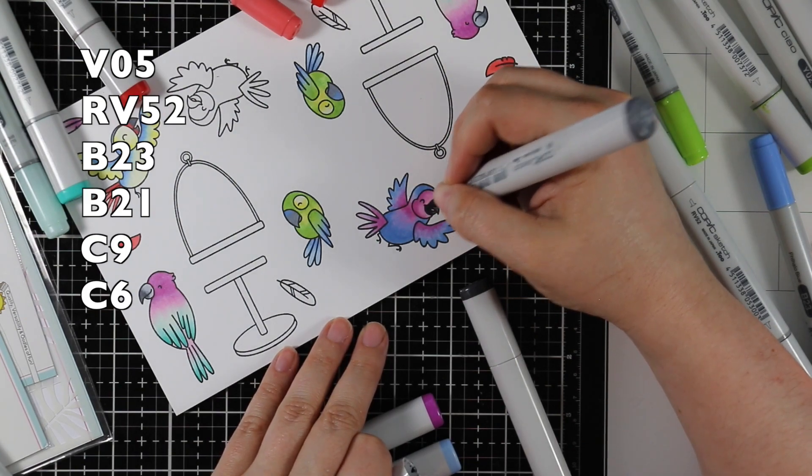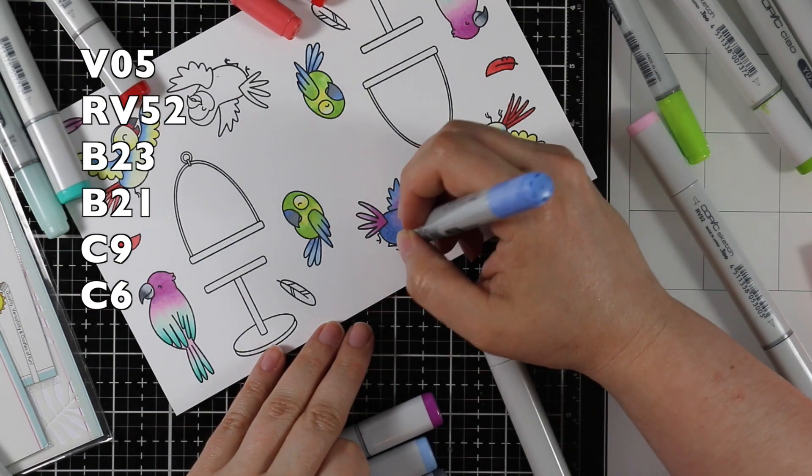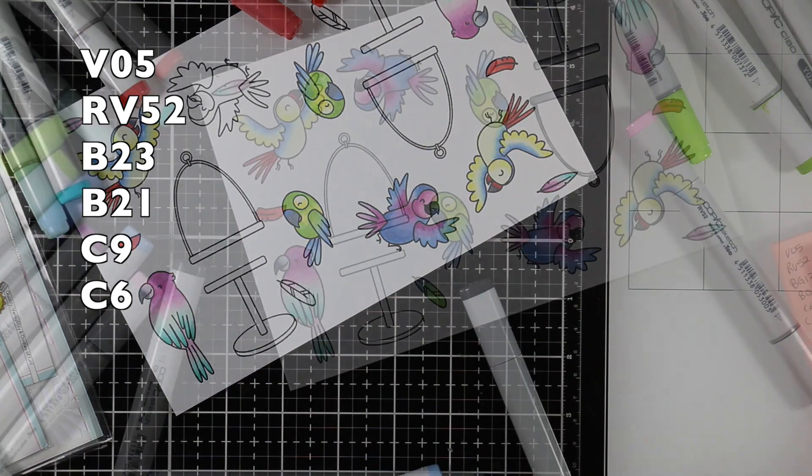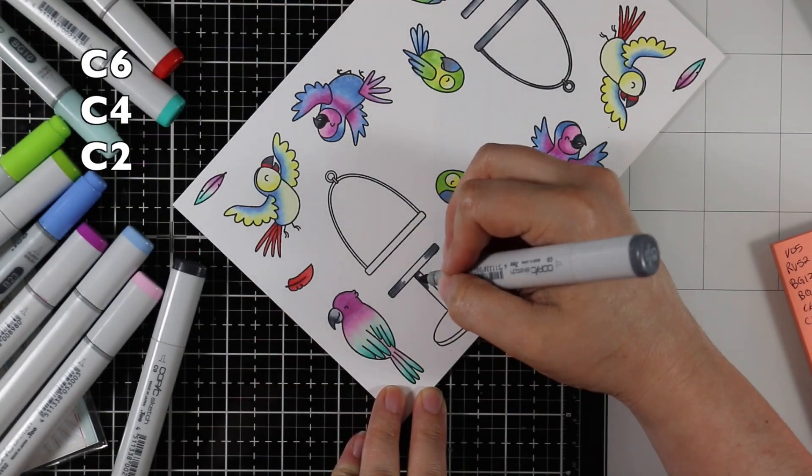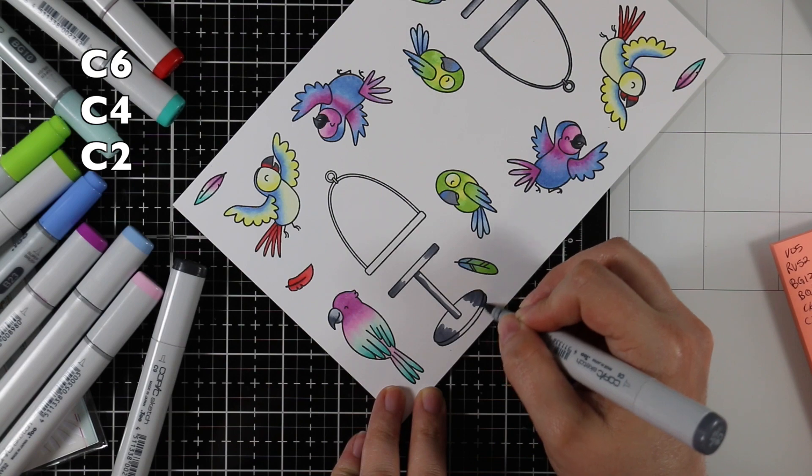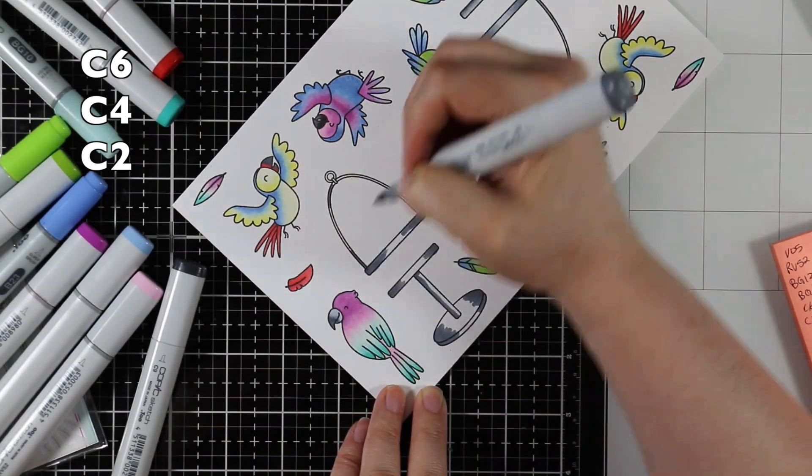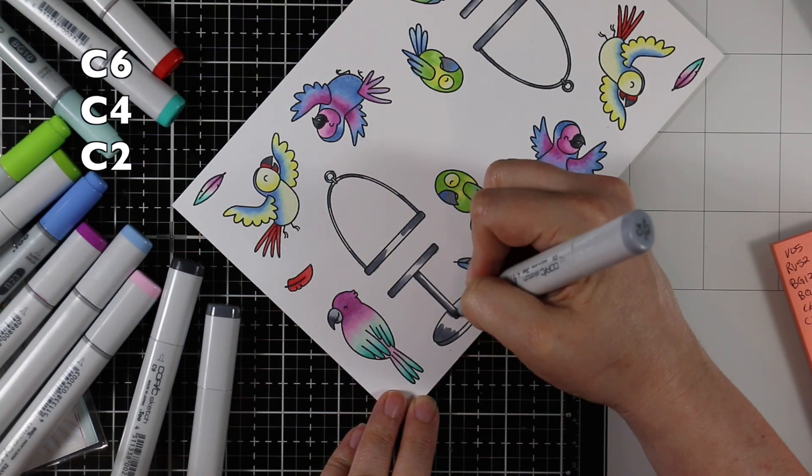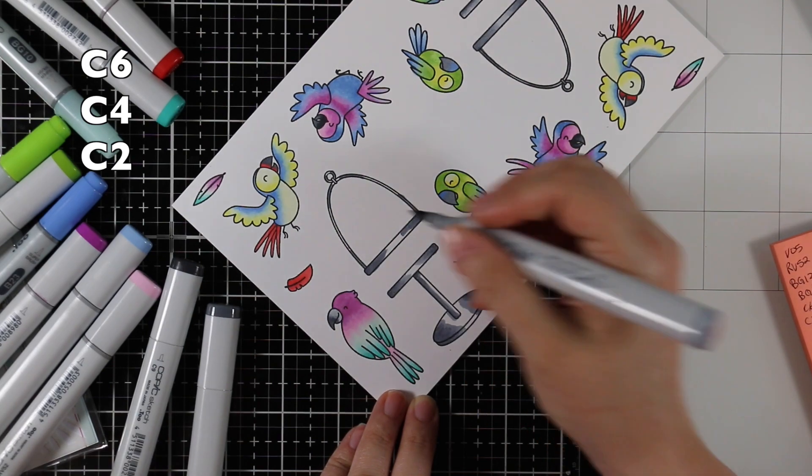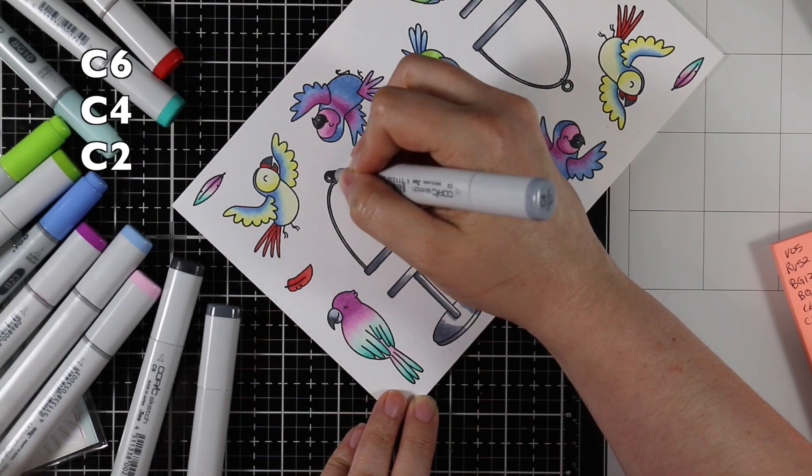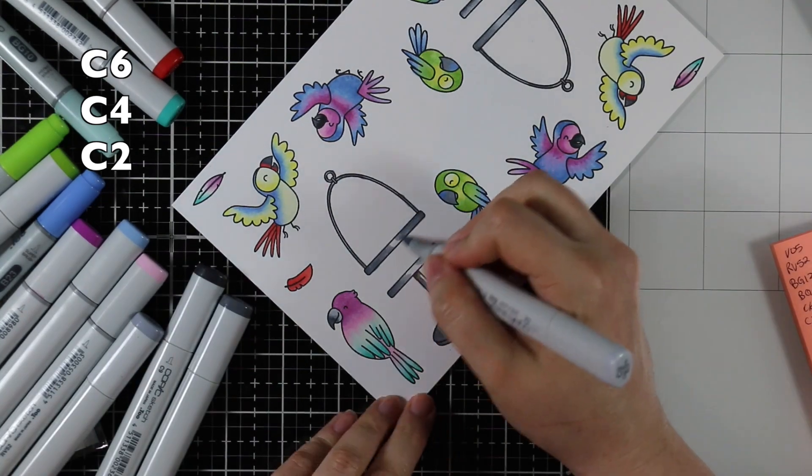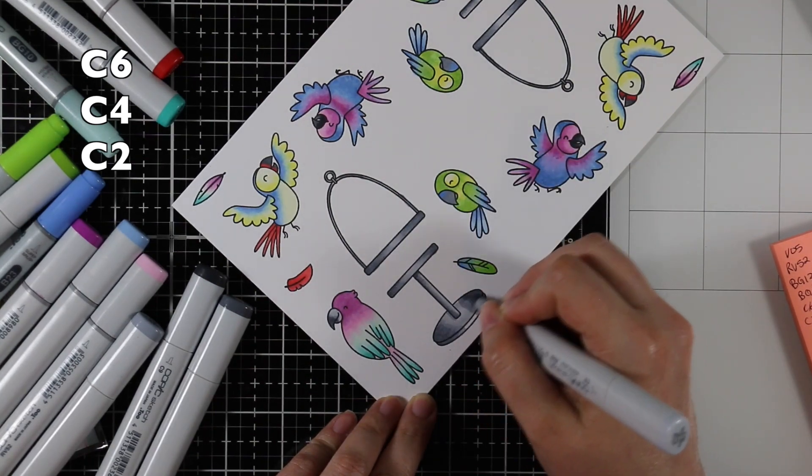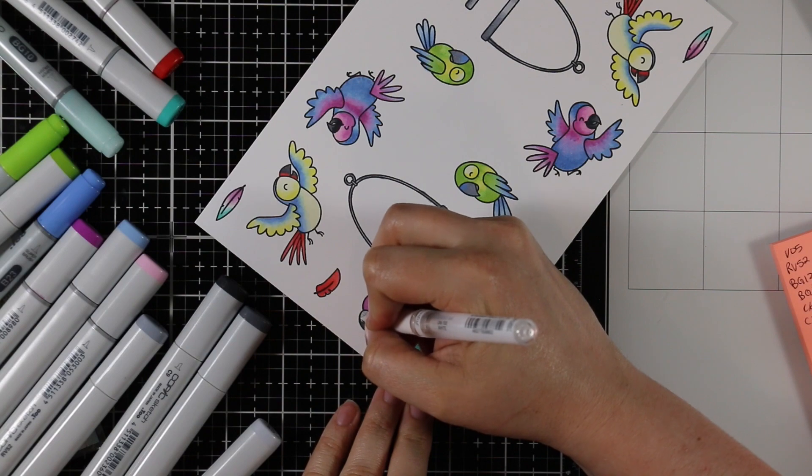My go-to cardstock is the Neenah 80 pound Classic Crest solar white, it just works the best. Whatever floats your boat when it comes to specifics, but I just recommend getting a very good white cardstock and then a good stamping ink like this Ink on Three Blackout. Simon Says Stamp's intense black, MFT has an extreme black, any of those ones are really good stamping inks that do not bleed or smear.